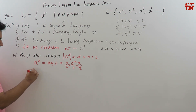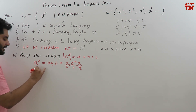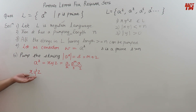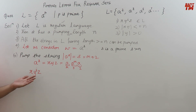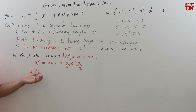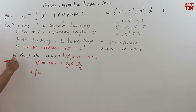We have divided the string successfully. For pumping, we write X·Y^i·Z. We need to give a value to i. Rather than using an integer like 2, here we work with variable values. Let us consider i equals S plus 1. That means we are pumping it to the value S + 1.